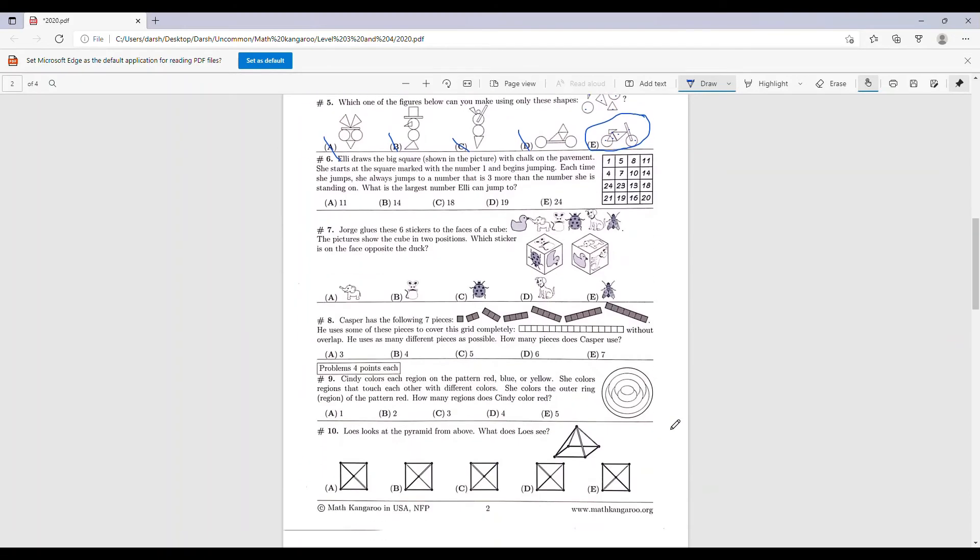Okay, number 6. Ellie draws the big square, shown in the picture, with chalk on the pavement. She starts at the square marked with the number 1 and begins jumping. Each time she jumps, she always jumps on the number that is 3 more than the number she's standing on. What is the largest number Ellie can jump to? So she starts on 1, and let's see, we have 2 options. We can go to 4 or we can go to 5.